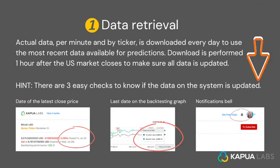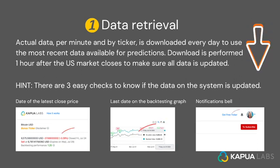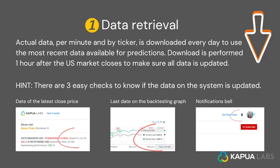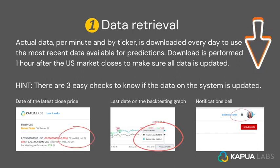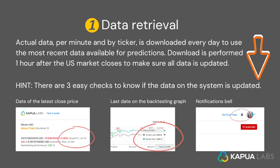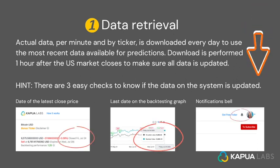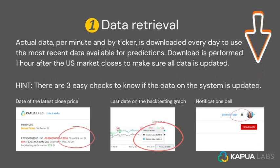Step number one: data retrieval. Actual data, per minute and by ticker, is downloaded every day to use the most recent data available for predictions. Download is performed one hour after the U.S. market closes to make sure all data is updated. There are three easy checks to know if the data on the system is updated: check the date of the latest close price, check the last date on the backtesting graph, and check the notifications bell.